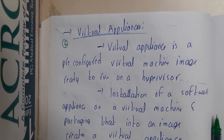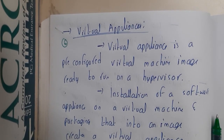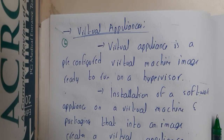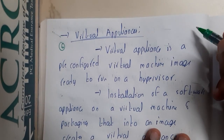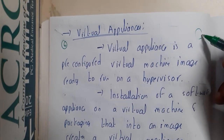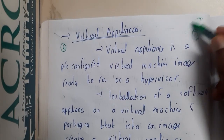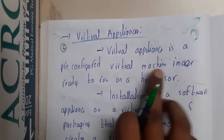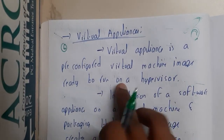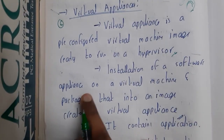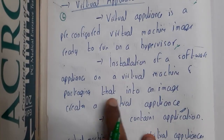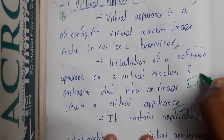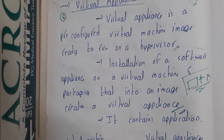In this lecture let us go through the concept of virtual appliance. In simple words, a virtual appliance is a combination of a virtual machine with an application on it. It is a pre-configured virtual machine ready to run on a hypervisor. Installation of a software appliance on a virtual machine and packaging that into an image creates the virtual appliance — so a virtual machine image with an application is your virtual appliance.